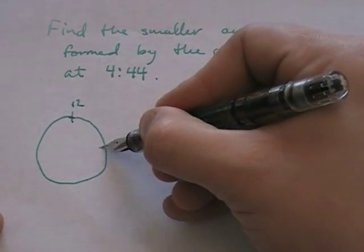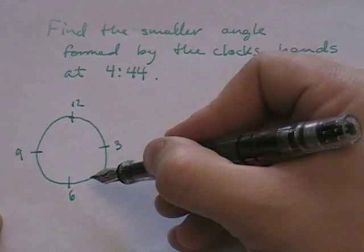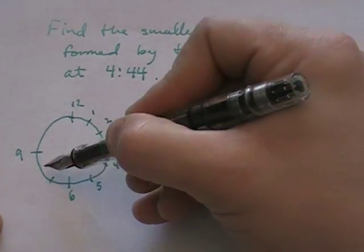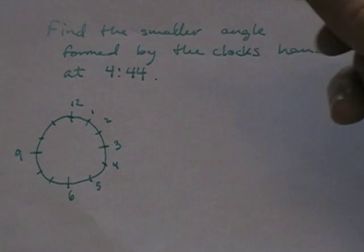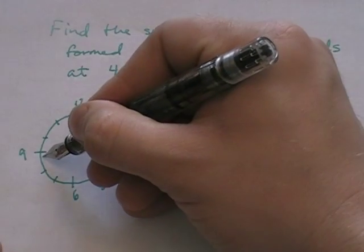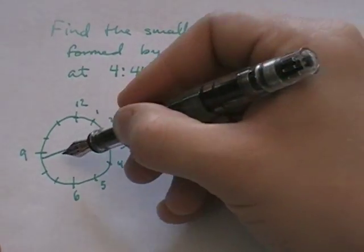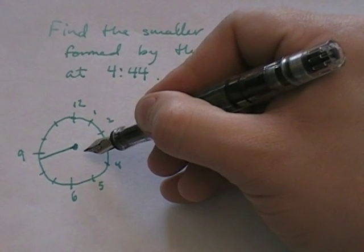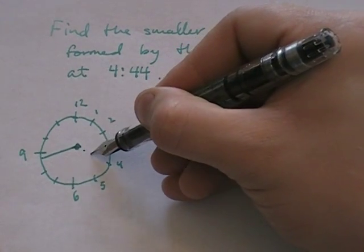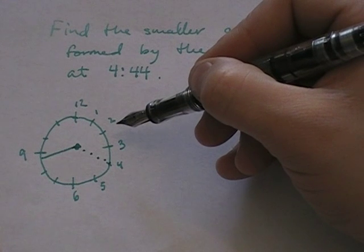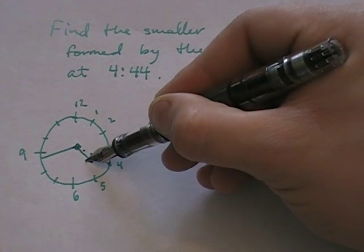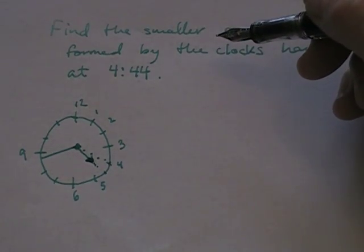We've got 12, 3, 6, and 9 on the clock, and 4 and 5 are somewhere in here. So where is 4:44? The minute hand will be almost on the 9. The mistake most students make is putting the hour hand exactly at the 4. The hour hand points at the 4 only when it's exactly 4 o'clock — by 4:44 it's between 4 and 5, much closer to 5.